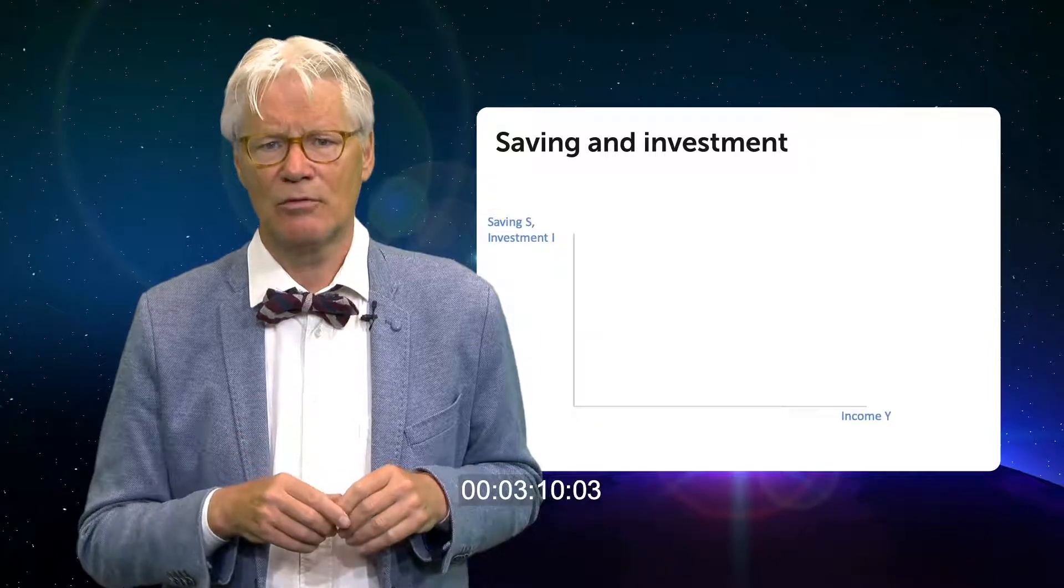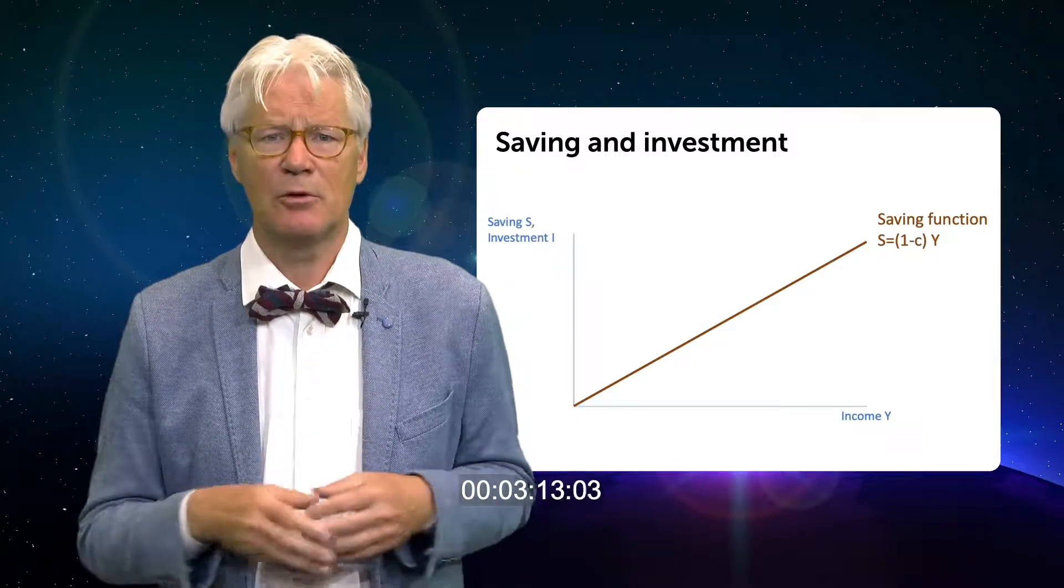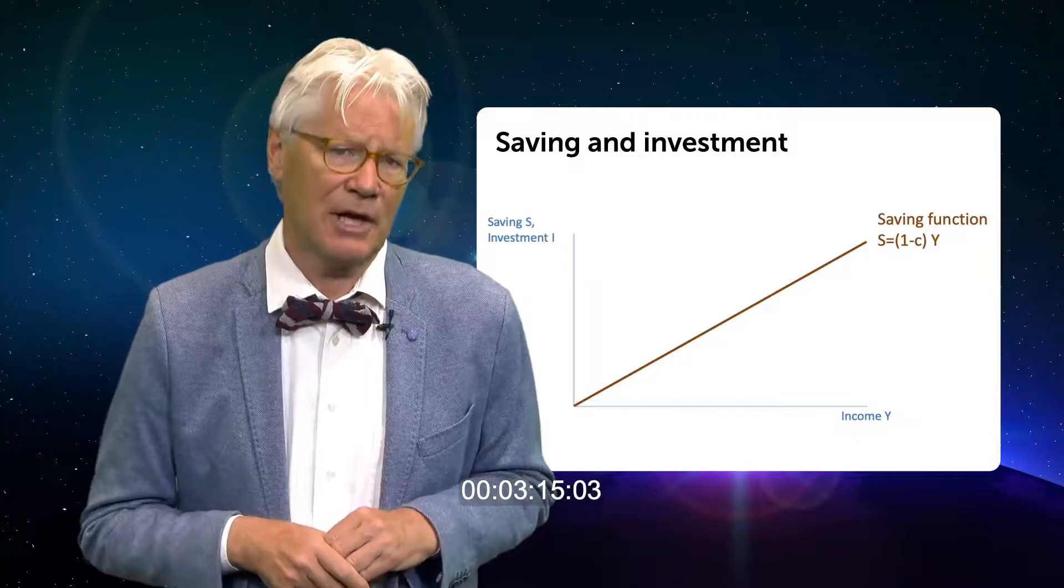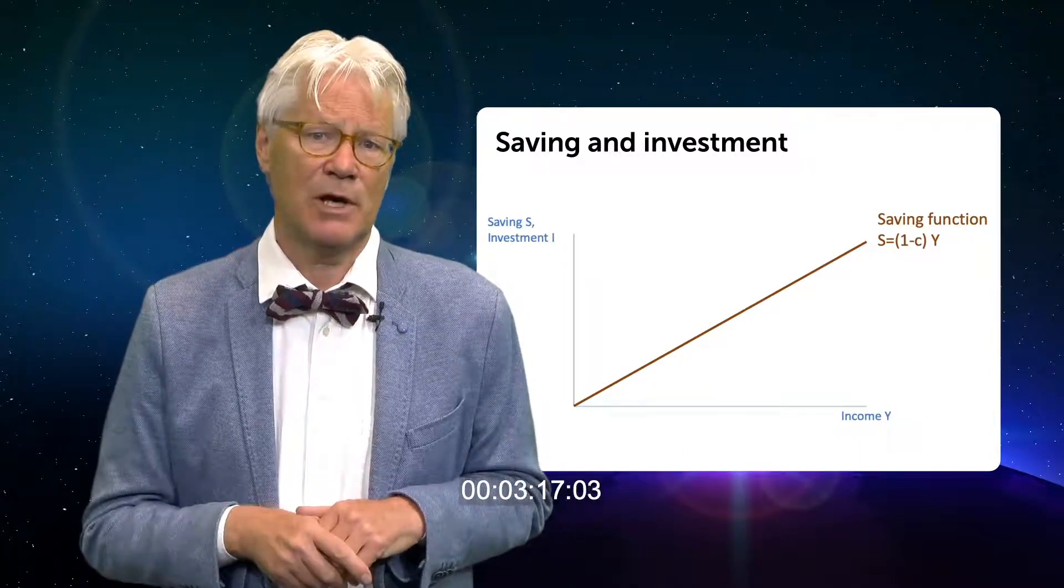Now let us turn to the graphical analysis. As before we have income Y on the horizontal axis and on the vertical axis we have investment and saving.